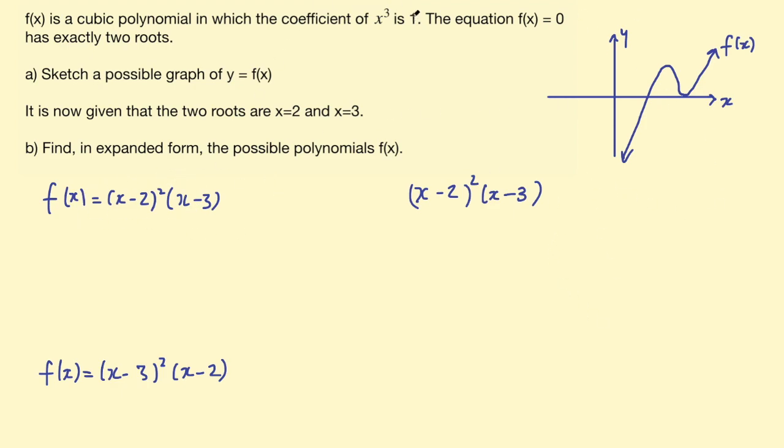So another possibility, if they didn't tell you the coefficient was positive, you might also have to consider f(x) = -(x - 2)²(x - 3). That would still give you the same two roots, it would just be facing the other way. Okay, so we don't have to worry about that because we have a positive cubic.